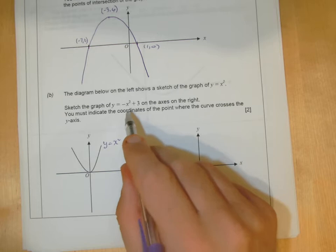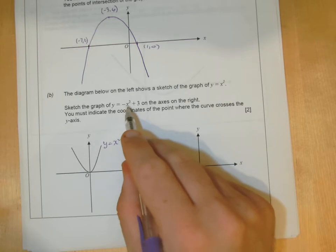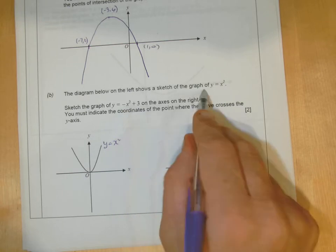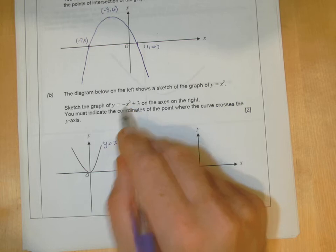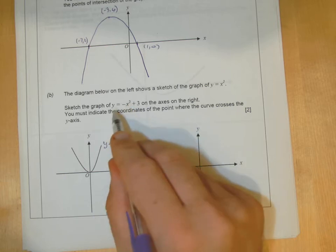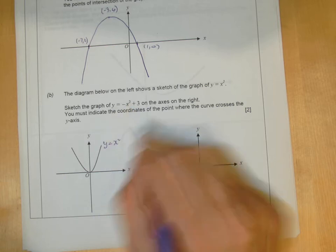First transformation you're going to do is, what happens is this x squared has a minus. So if there's a minus here, there wasn't a minus here, and there's not a minus here with this. So if there's a minus there, what you do is you make all the y values - they're positive here -